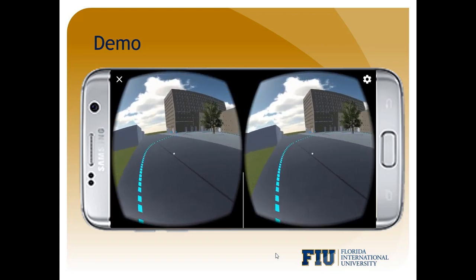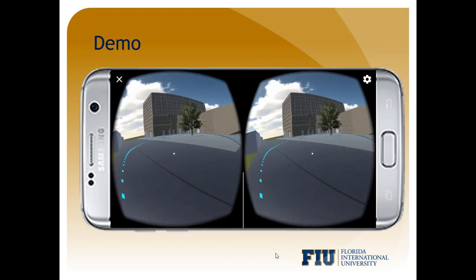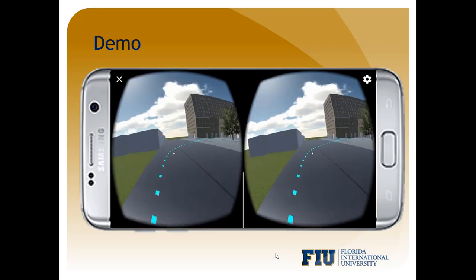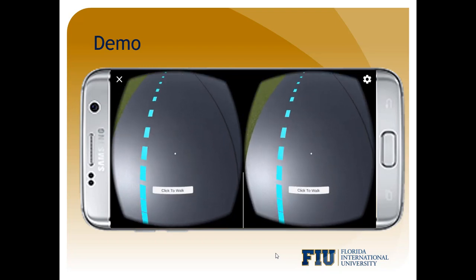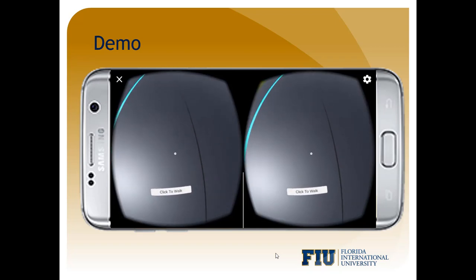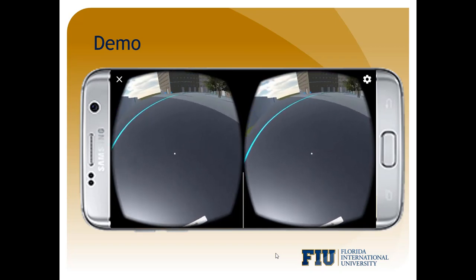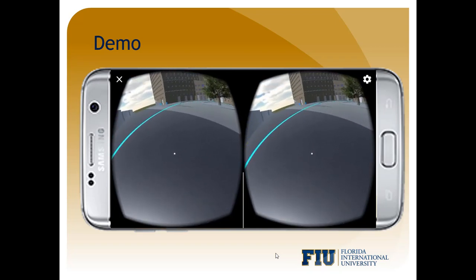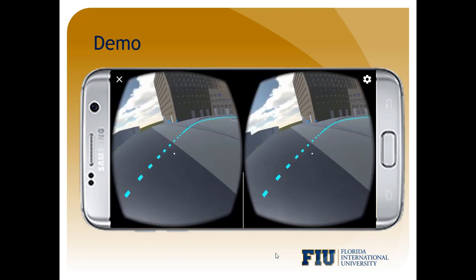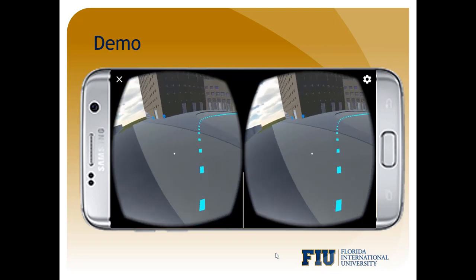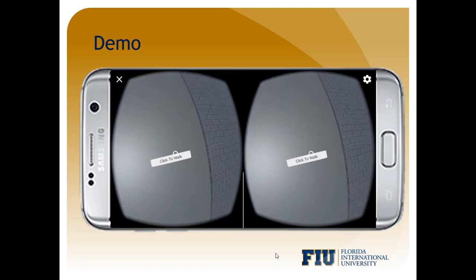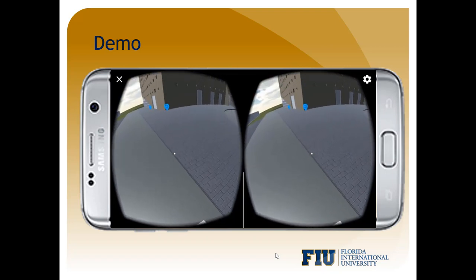As you get into the application, you can see the SIPA building. You can look around and if you look down, you can see the click to walk button. If you click it, you'll begin walking. You can look where you want to walk. Whenever you want to stop, you just have to look down again and click that same button.